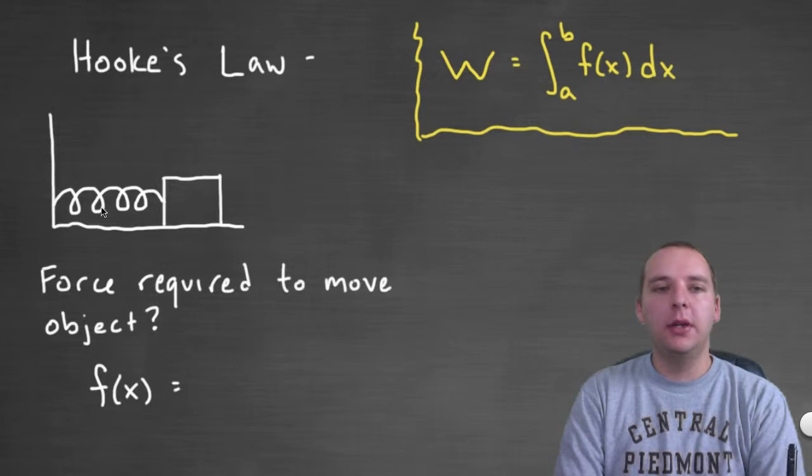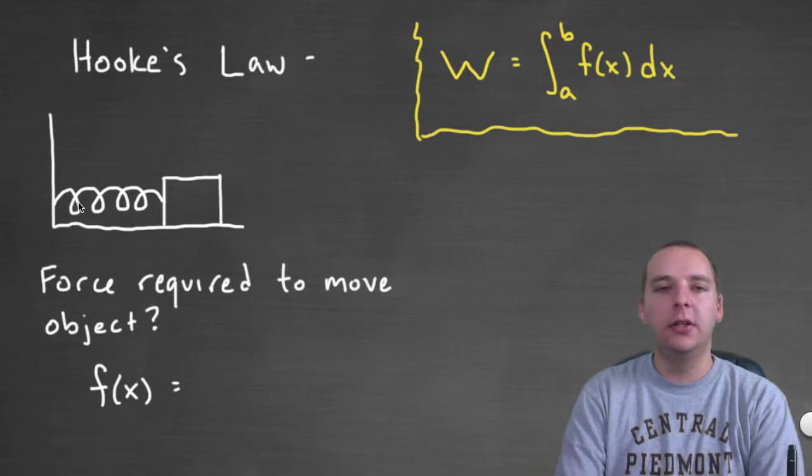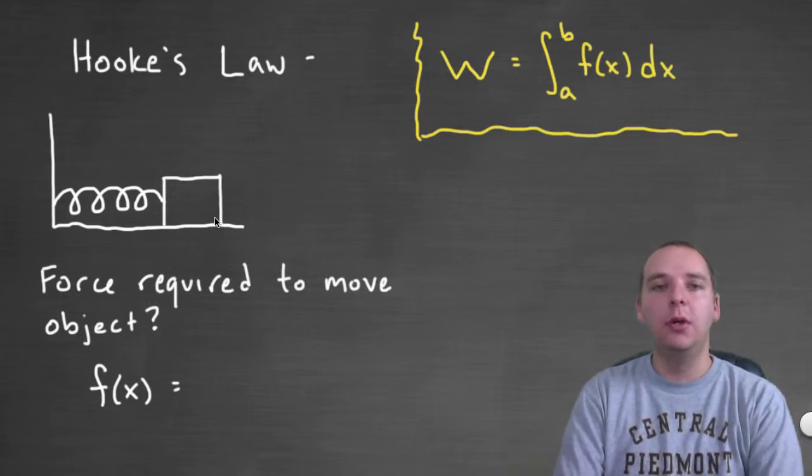Imagine you had an object here that was attached to a spring, and the spring was attached to some fixed wall or ceiling or something like that. Well, then there's a natural equilibrium point, and it doesn't require any force to keep it at that equilibrium point.